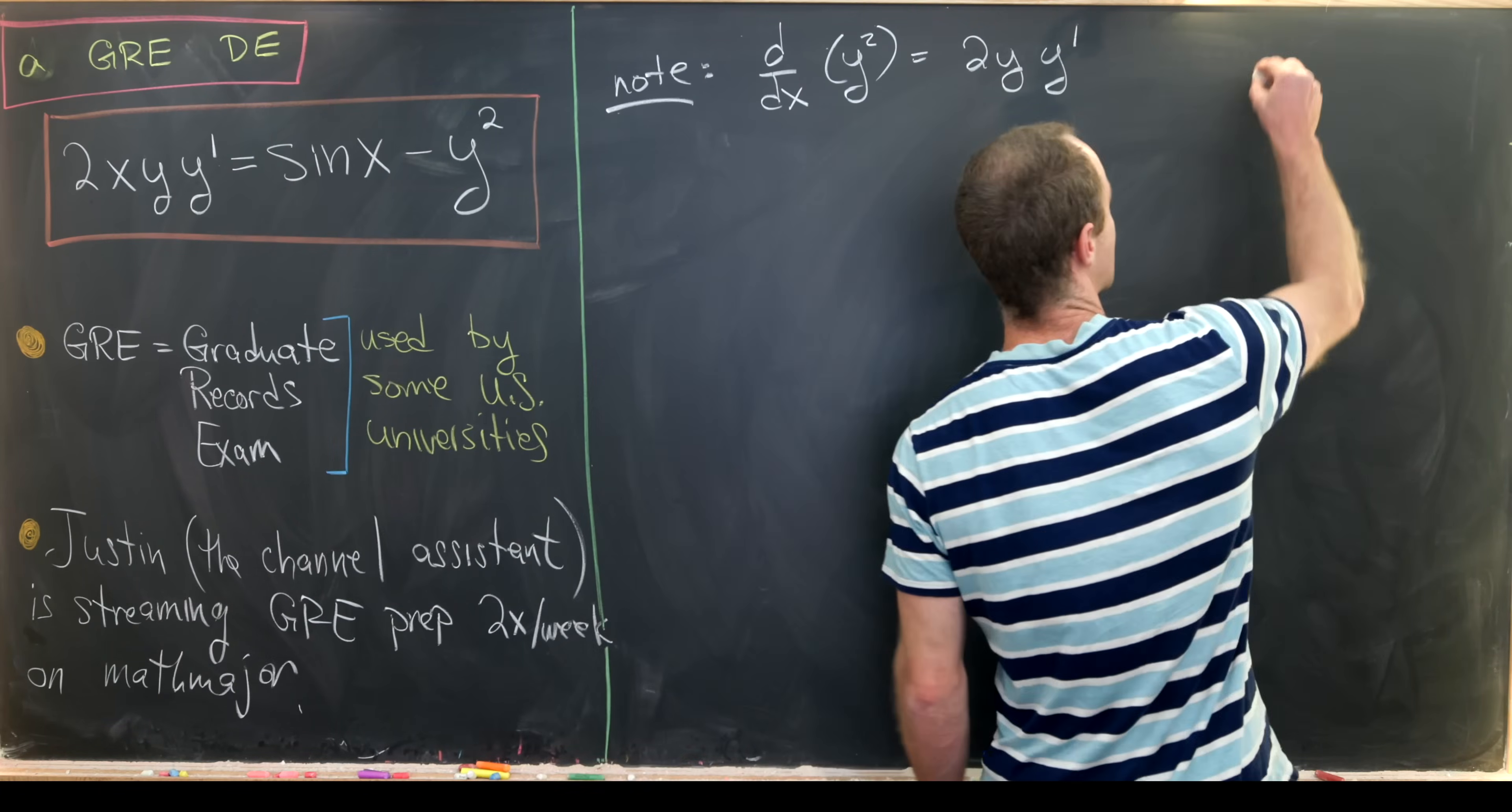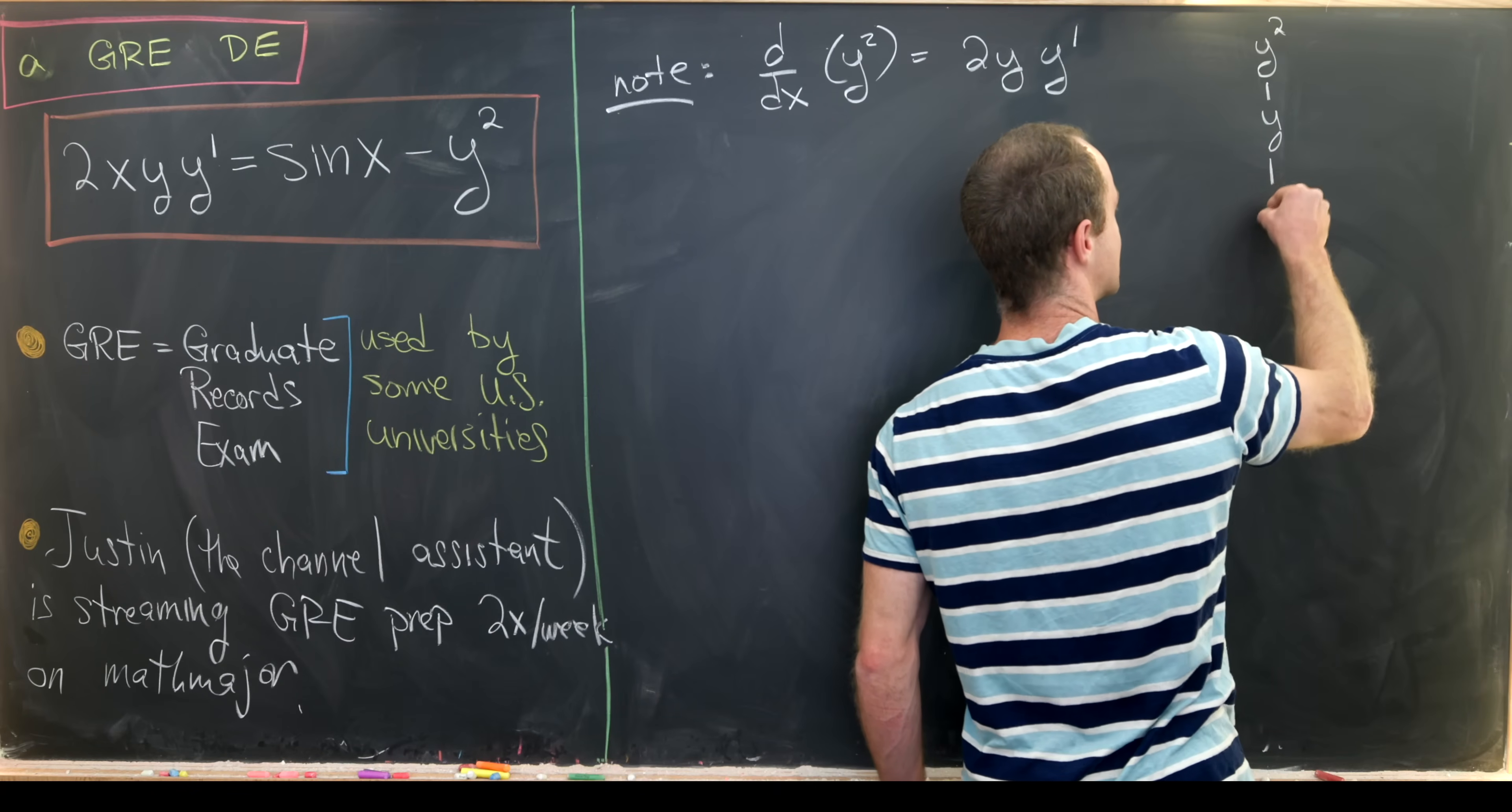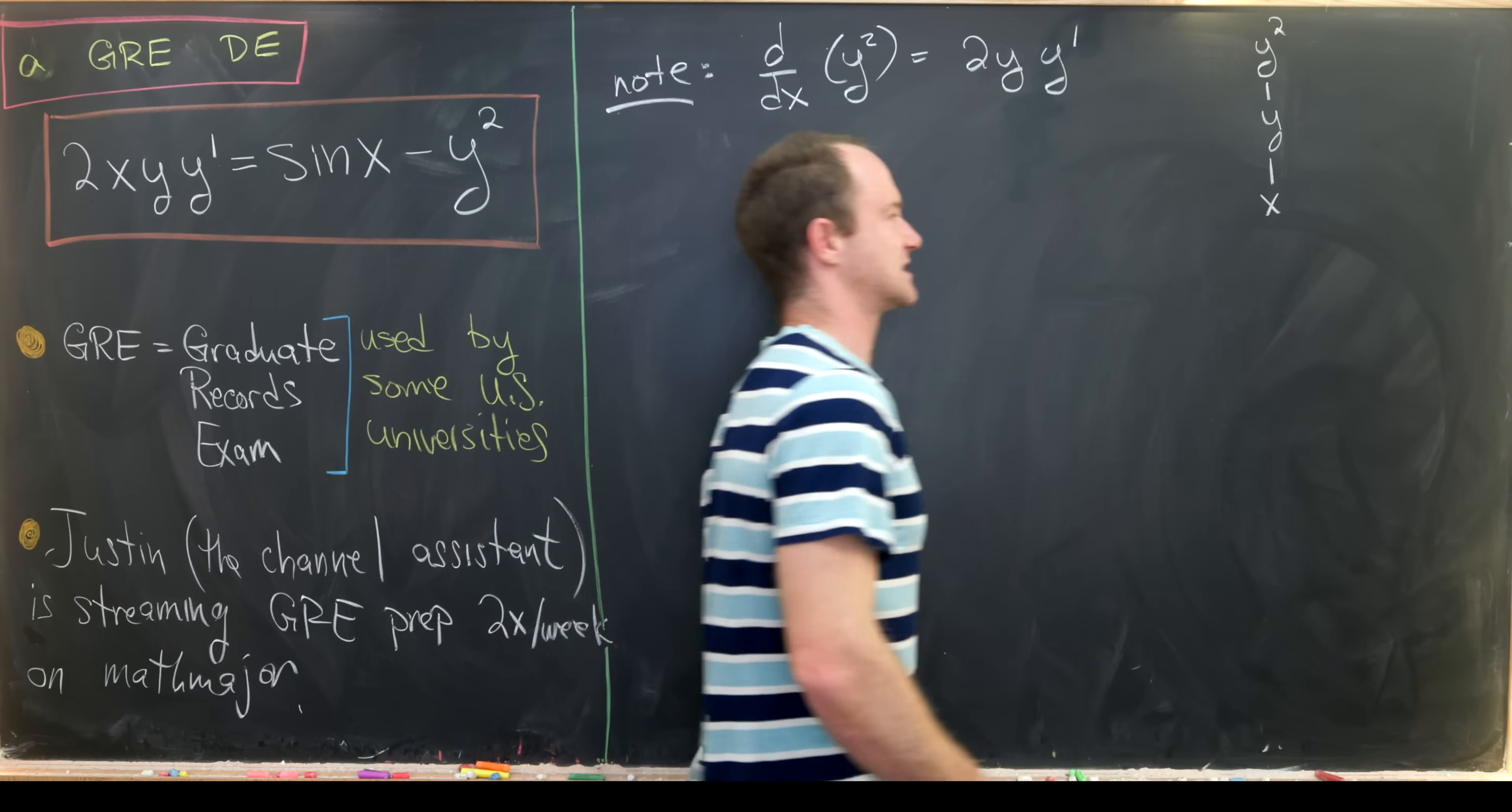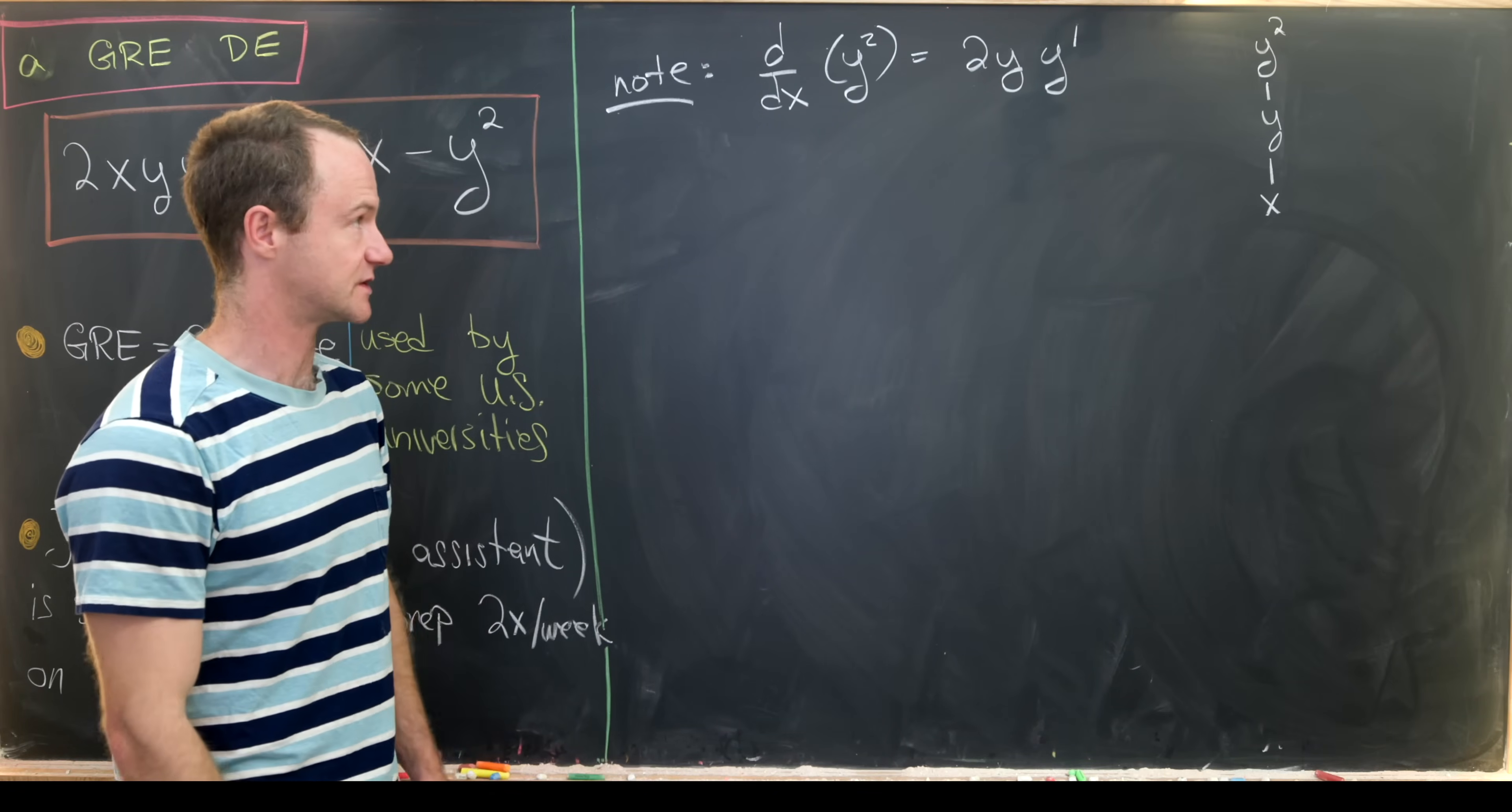And you can kind of think about it like this. The function y squared depends on y but that depends on x, and so we've got this tree of functional dependence that would give us the chain rule type result.